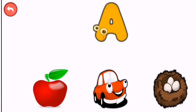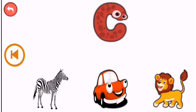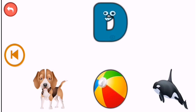Guess below the picture. A — apple. B — ball. C — car. D — dog.